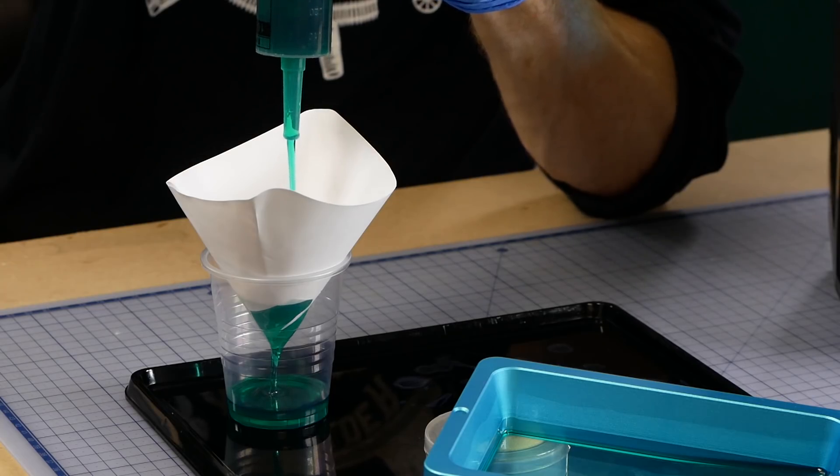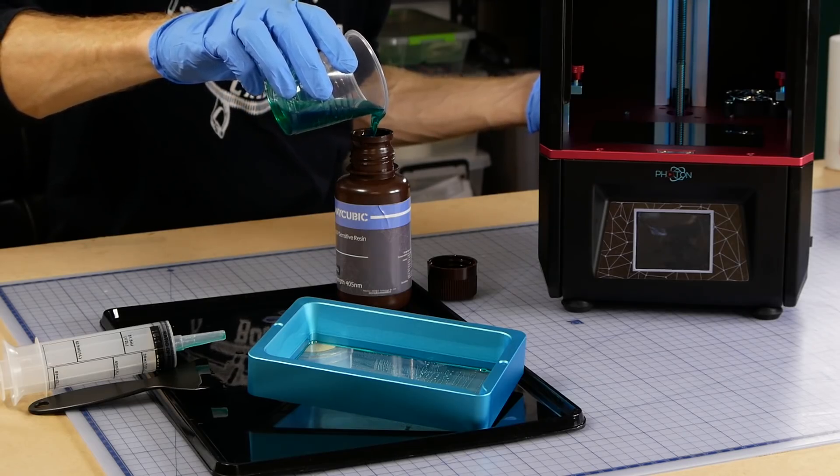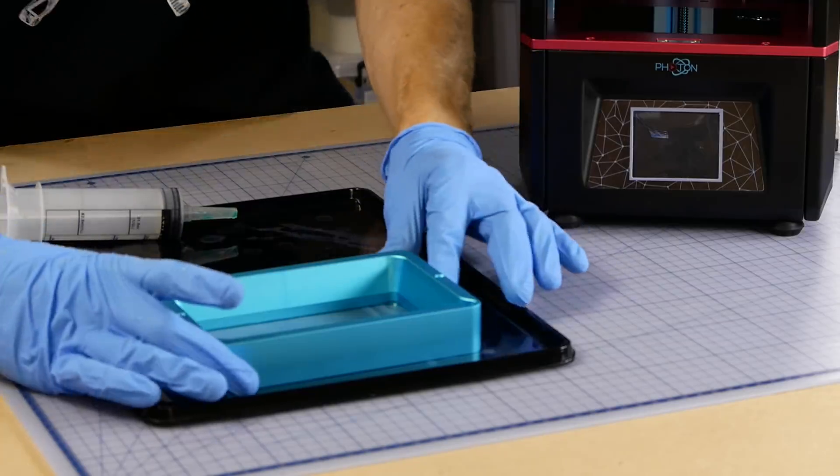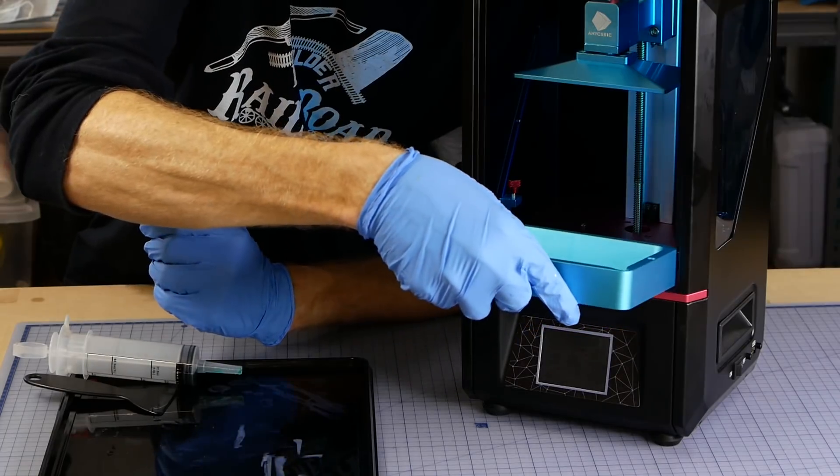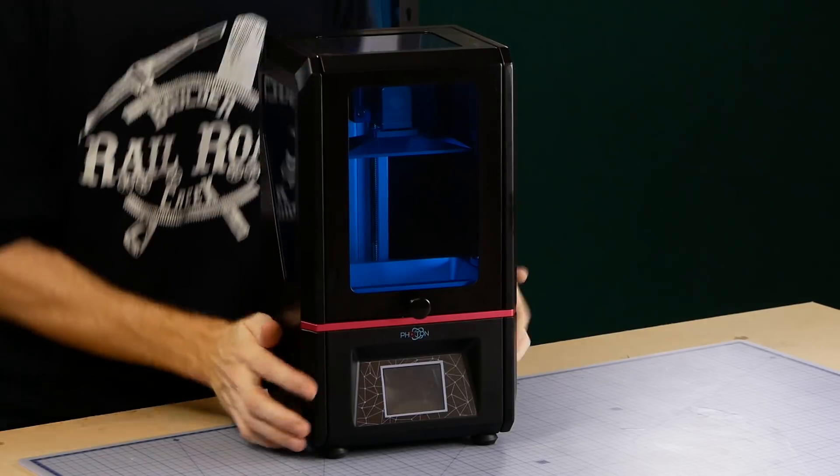Once you're finished printing the excess resin is filtered out before pouring it back into the bottle and the vat is given a wipe down with some paper towels. Now it's clean and ready to be put away until next time. It's recommended not to leave resin sitting in the vat for more than two days.